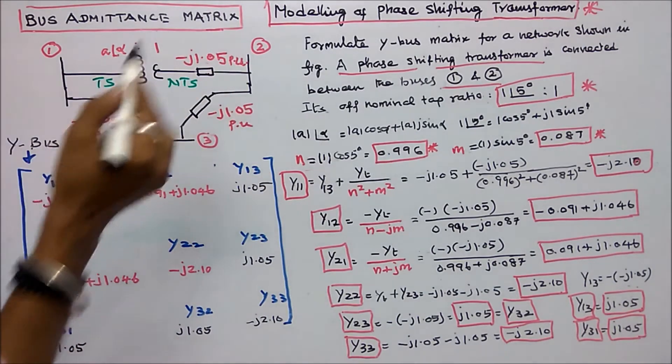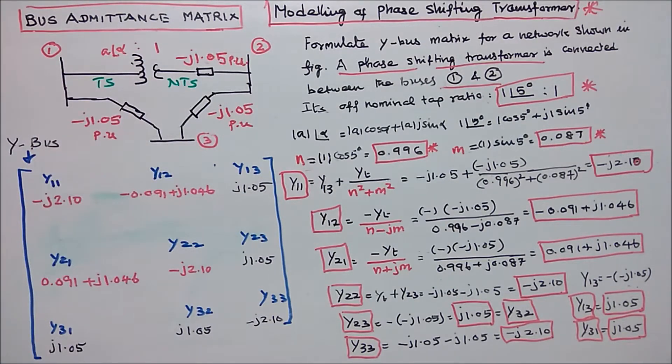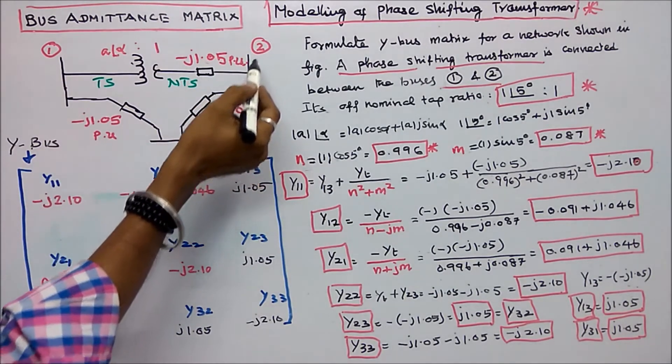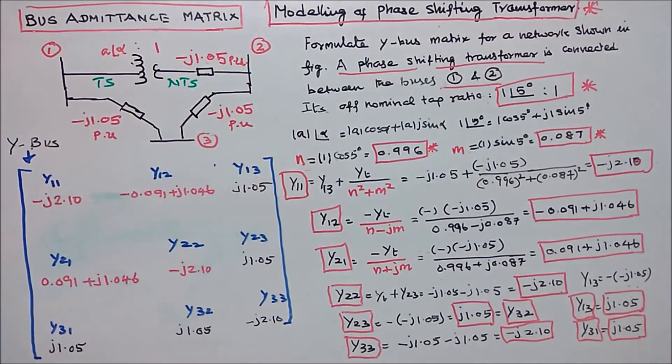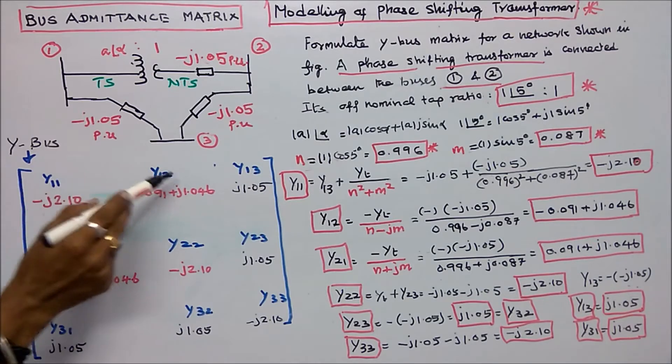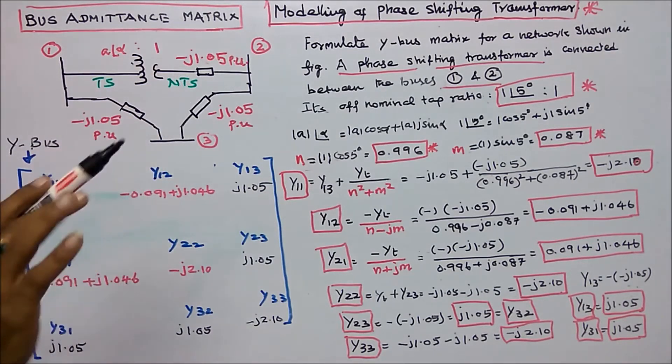Series line admittance is given. That is yt is equal to minus j 1.05 per unit. The admittance between the line 2 and 3 is minus j 1.05 per unit. 1 and 3 is minus j 1.05 per unit. All the admittance values are in per unit.